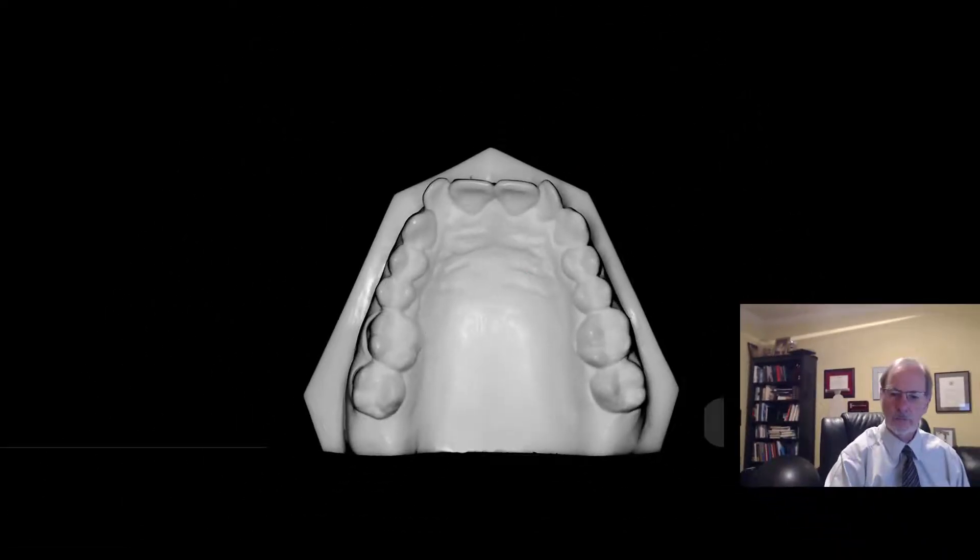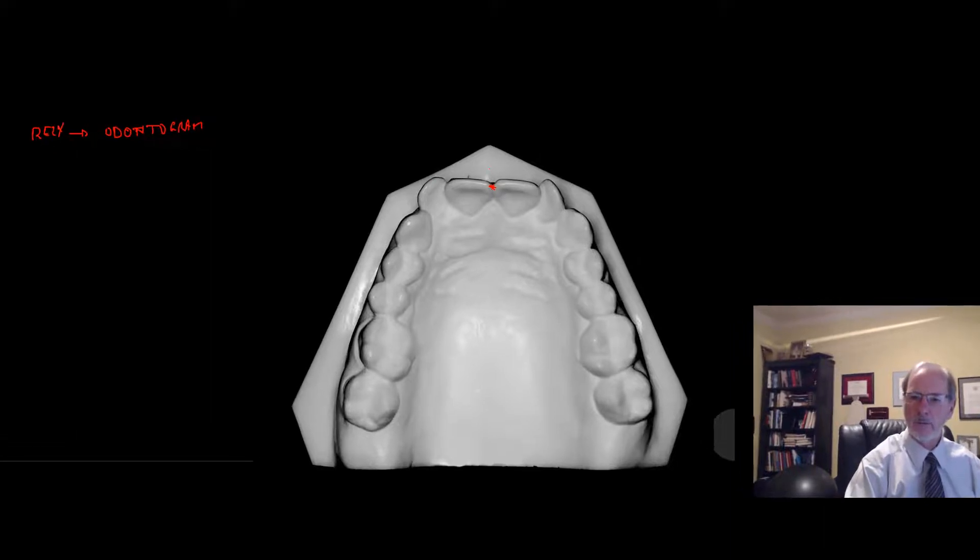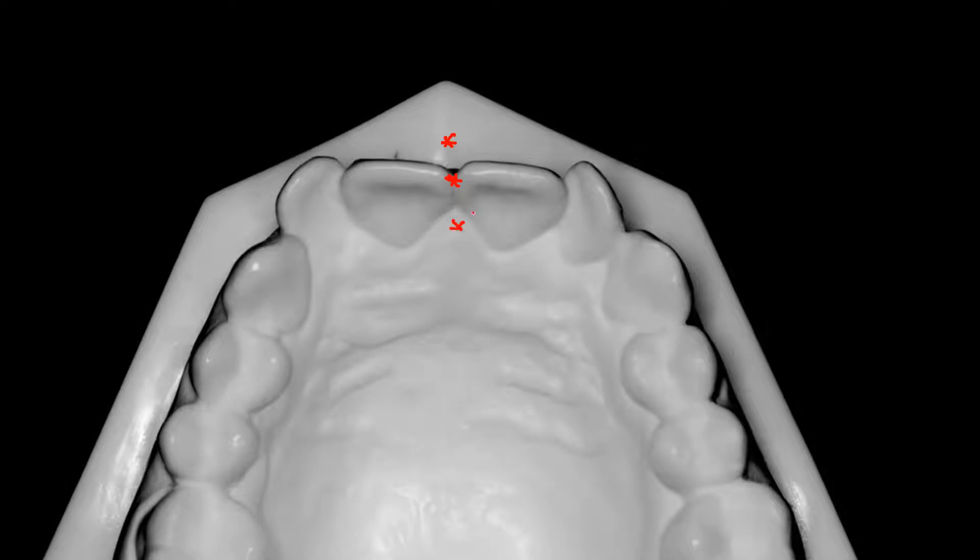Then we move to the occlusal. The occlusal aspect will rely on the odontogram because you need to decide a very important point, the reference point. It could be here, could be here, theoretically could be here, it could be right or left. This point is extremely important because it will allow you to decide the AP positioning of the incisors in space, which is super important for patients. They want to know where their teeth are going to be.